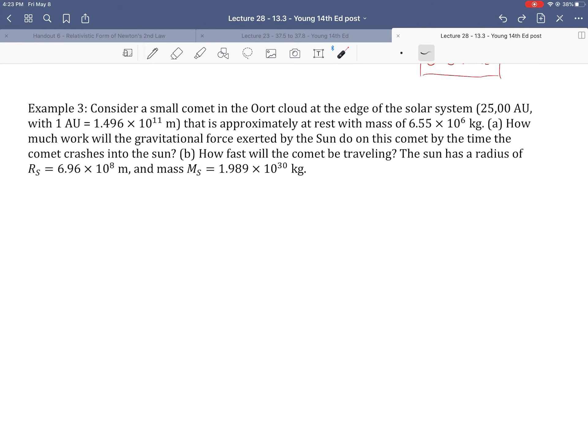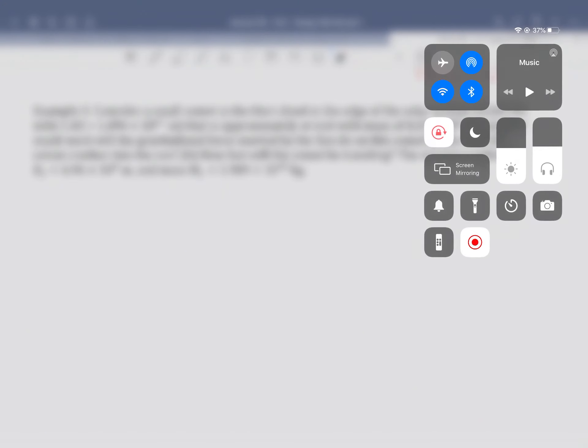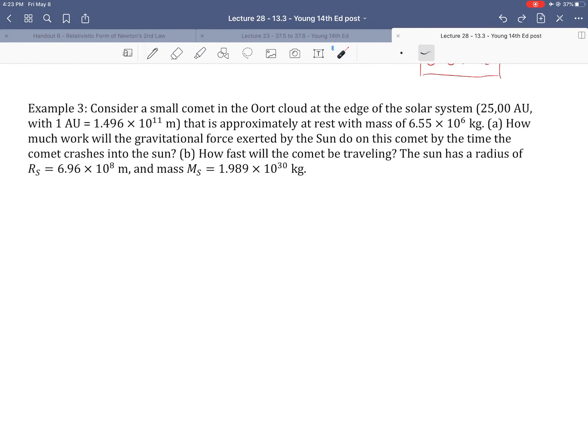Let's take a look at a very astronomical type of example, which would be typical of universal gravitation. In this problem, example three, we're going to consider a small comet in the Oort cloud. Look that up, it's a cool idea. This is found at the edge of the solar system. That is 25,000 astronomical units away.